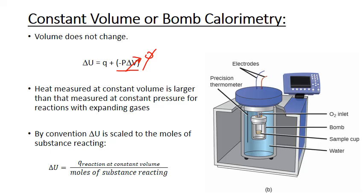The net result is that the heat measured in a bomb calorimeter at constant volume is actually larger than that measured at constant pressure for reactions with expanding gases. At constant pressure, the gases are allowed to expand and do work, so that energy is released as work instead of heat. This difference only applies to reactions with expanding or contracting gases. For all other reactions, the heat measured in a bomb calorimeter will be the same as that measured in a constant pressure calorimeter. We can use the heat of reaction measured at constant volume to calculate delta U in the same way we calculated delta H — simply divide Q reaction from our calorimetry by the number of moles of substance reacting.